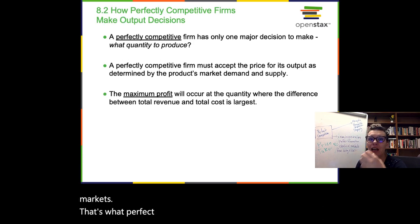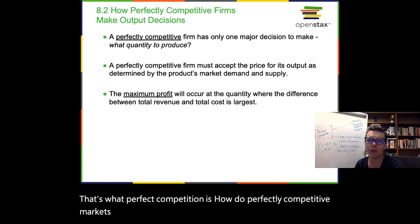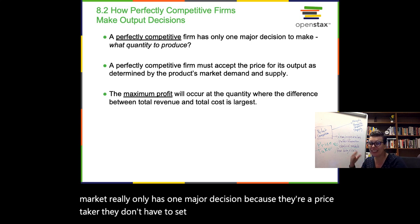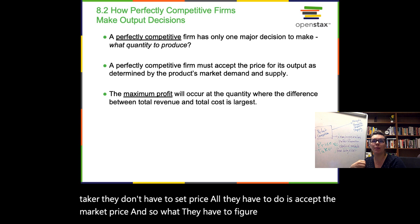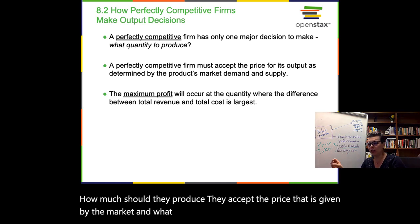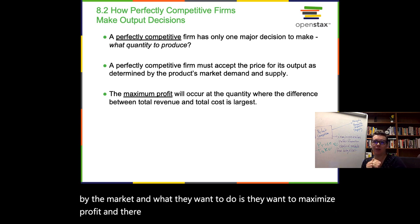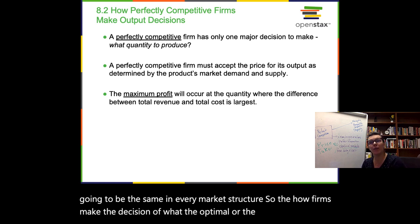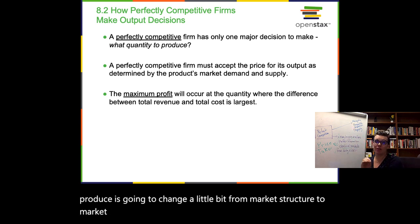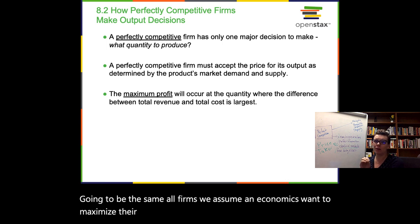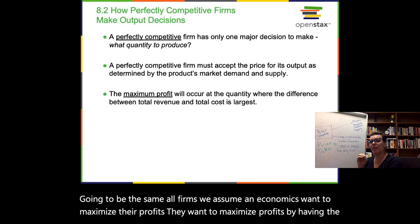How do perfectly competitive markets decide how much to produce? A perfectly competitive firm really only has one major decision. Because they're a price taker, they don't have to set price — they just accept the market price. What they have to figure out is, given market prices, how much should they produce to maximize profit. All firms, we assume in economics, want to maximize profits by having the highest total revenue and the lowest total cost.